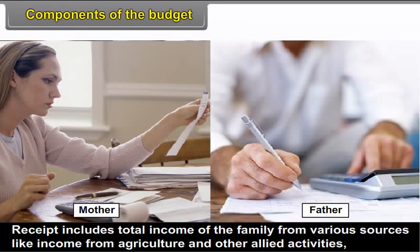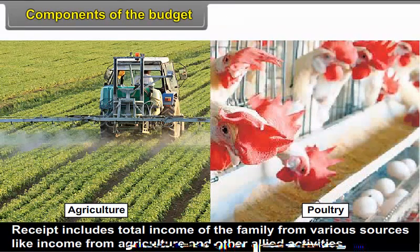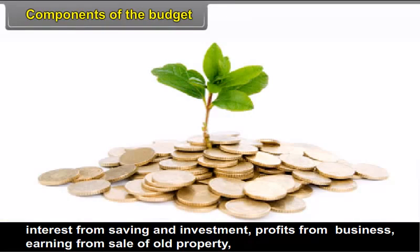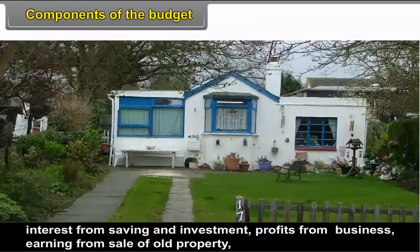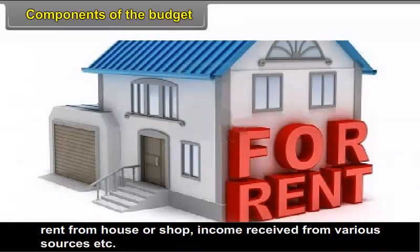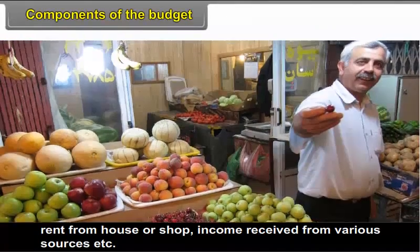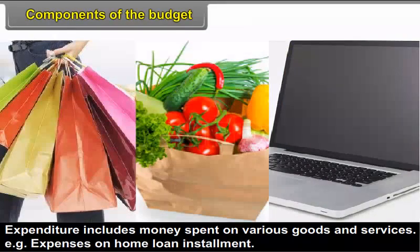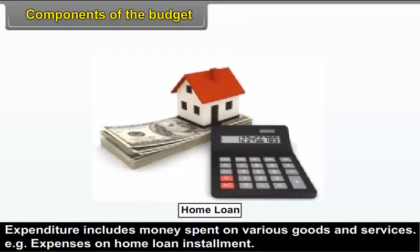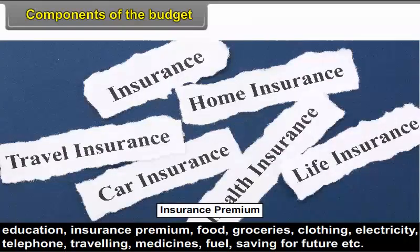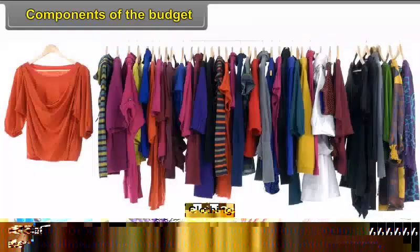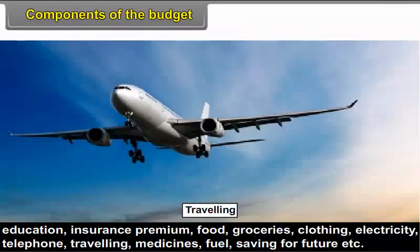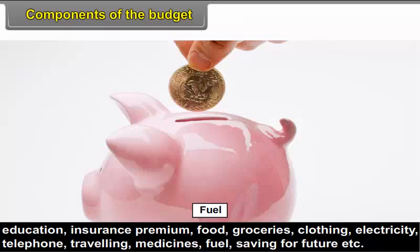4.4 Components of the Budget: Receipt includes total income of the family from various sources like income from agriculture and other allied activities, interest from savings and investment, profits from business, earnings from sale of old property, rent from house or shop, income received from various sources, etc. Expenditure includes money spent on various goods and services — home loan instalment, insurance premium, food and groceries, clothing, electricity, telephone, travelling, medicines, fuel, saving for future, etc.